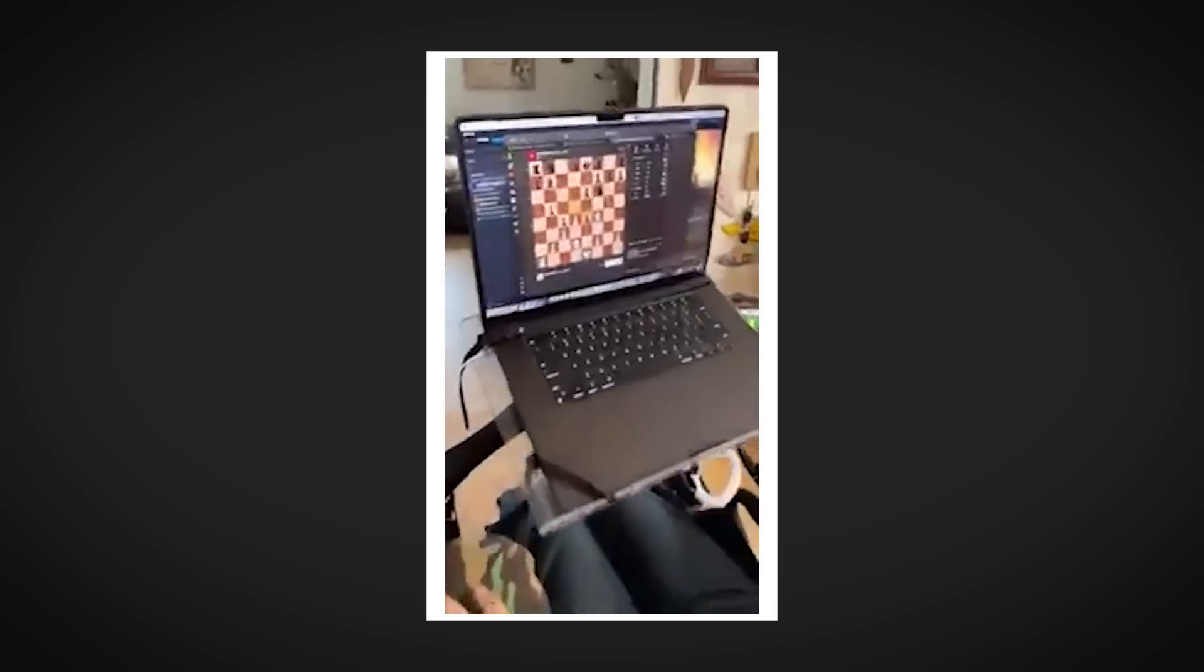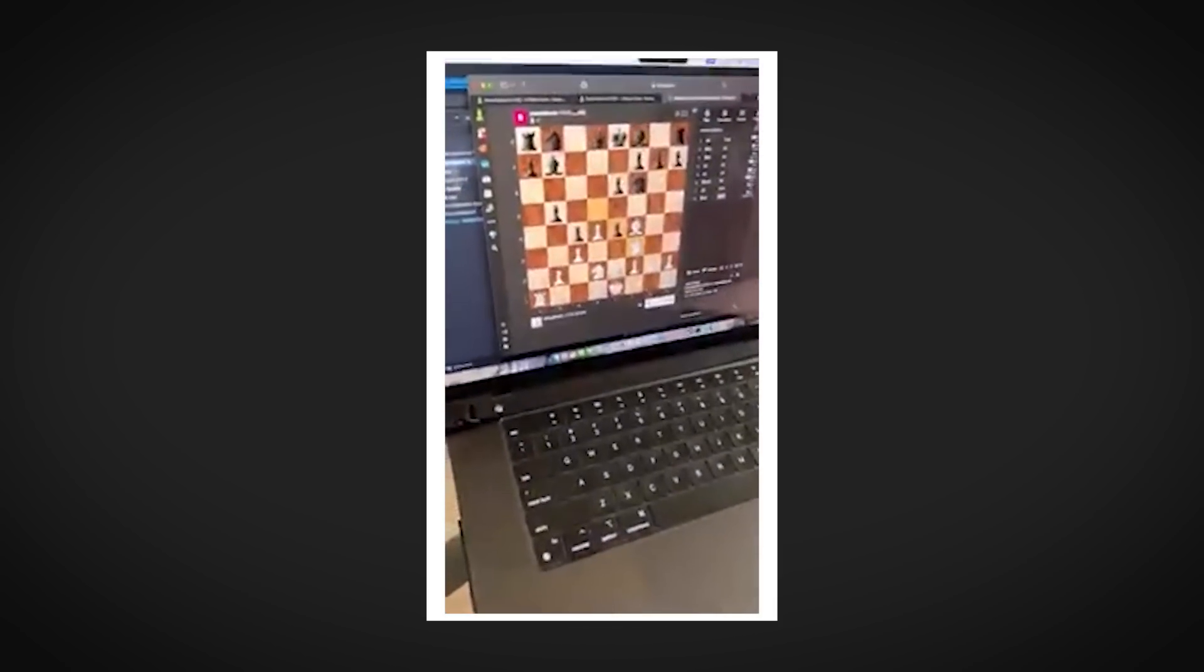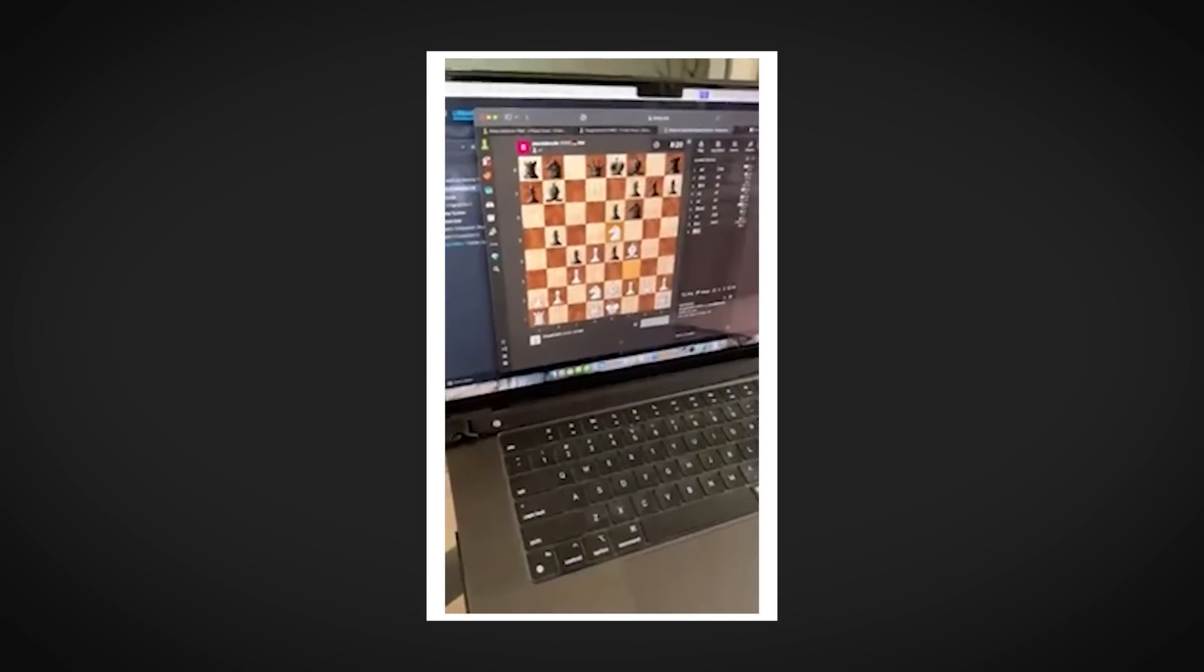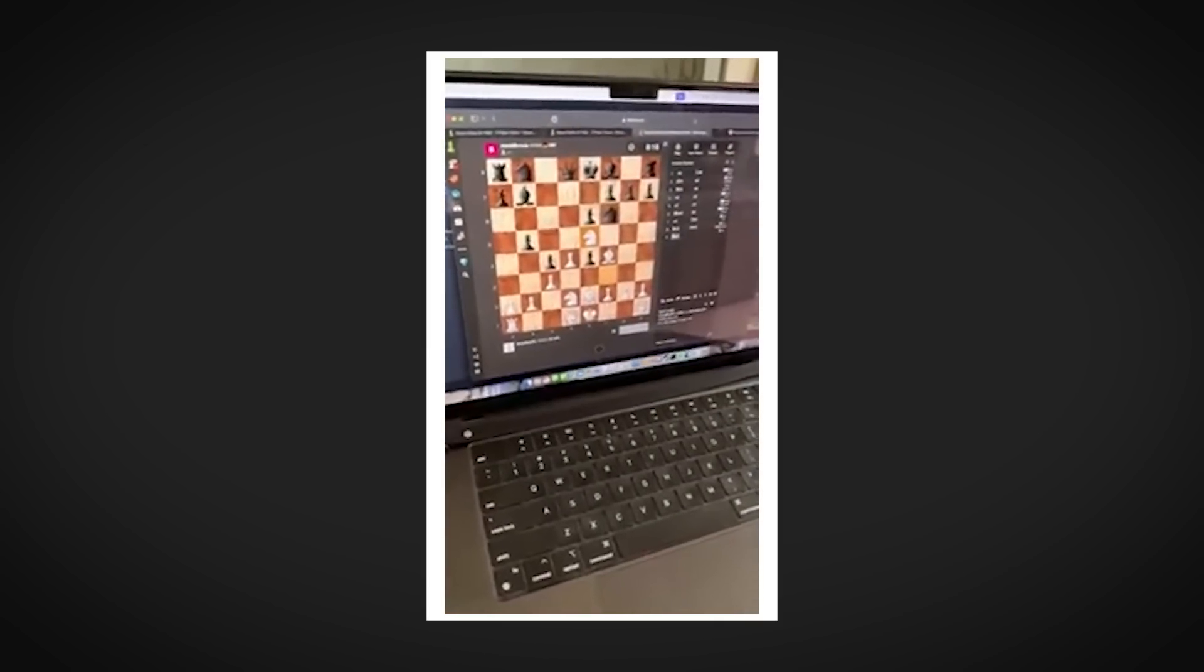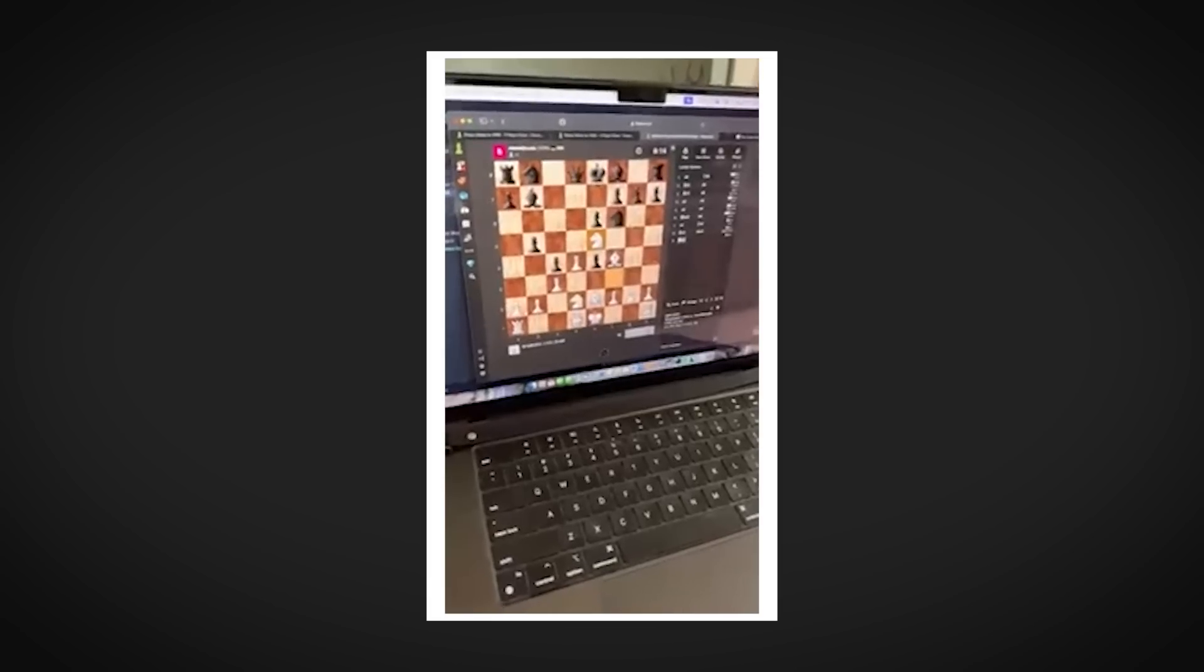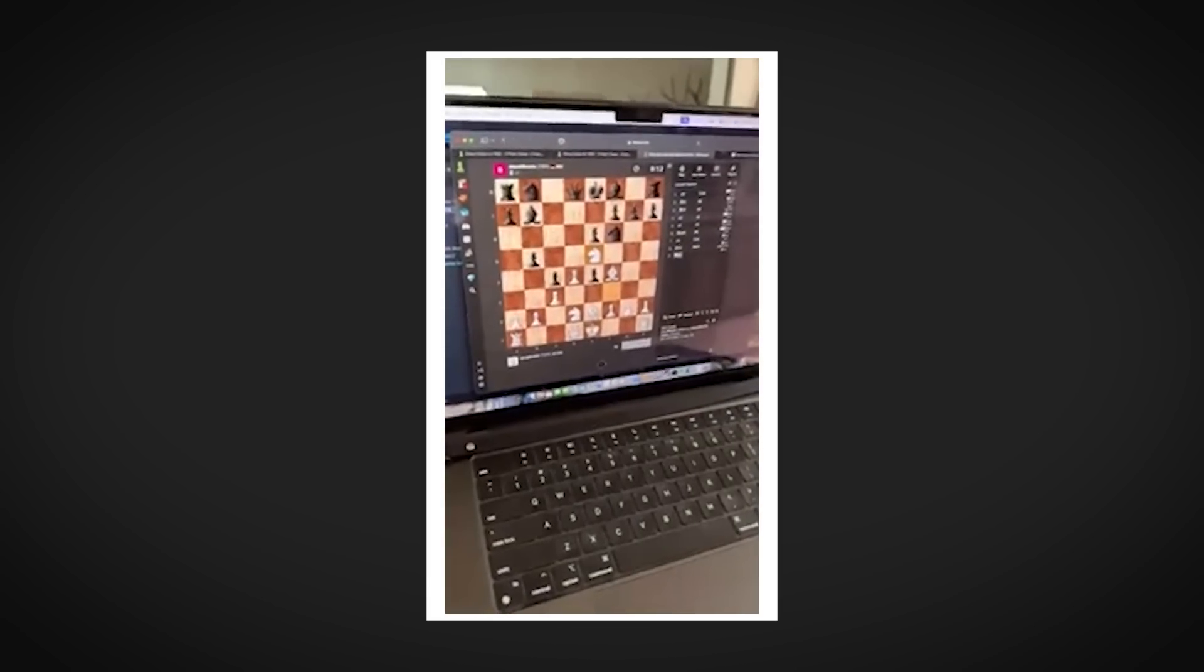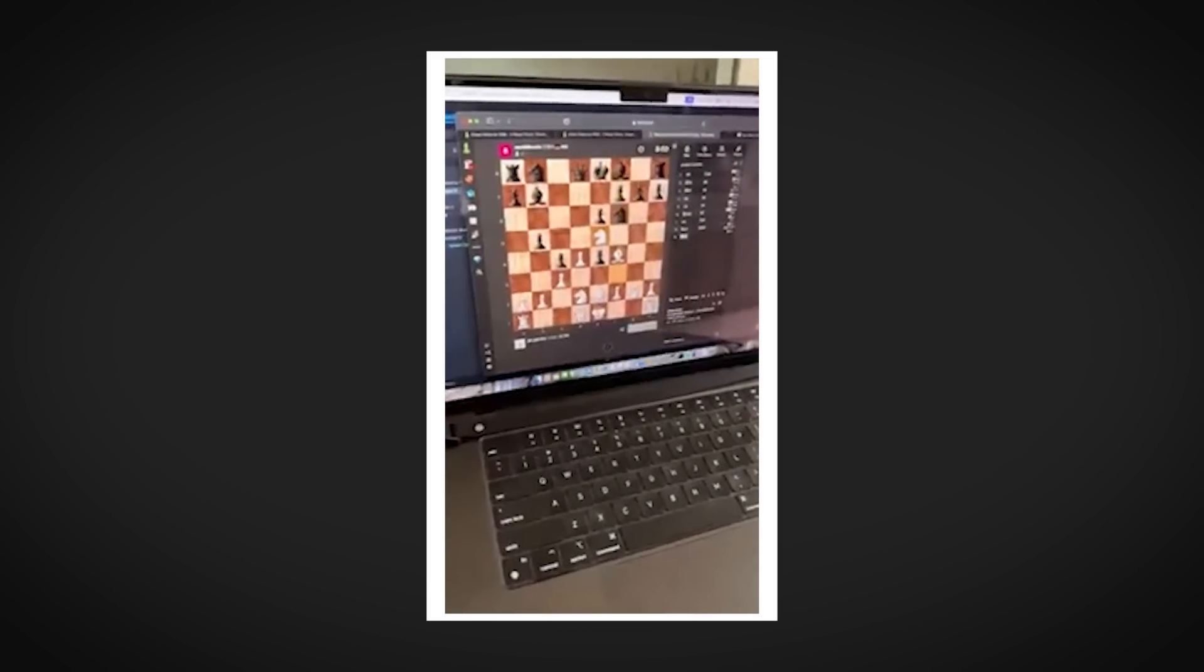The first demonstration we get is seeing Nolan play a game of virtual chess and it's indistinguishable from a person using a computer mouse. Nolan hits pause on the background music, he moves the cursor around the screen quickly and smoothly in a way that seems effortless.